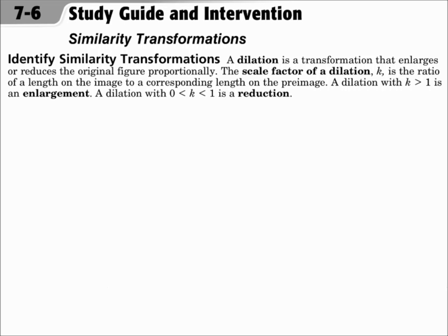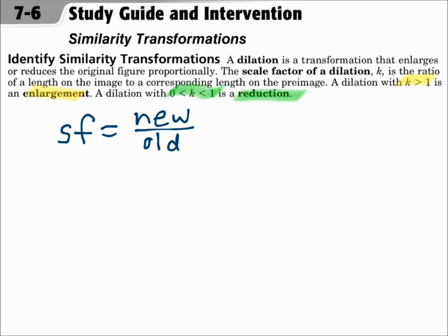If k is greater than 1, then it got bigger — it's an enlargement. If k is between 0 and 1, it's a reduction and got smaller. The scale factor can be found by using a new side length over an old side length. It's always new over old: a side length of the image over a side length of the preimage.